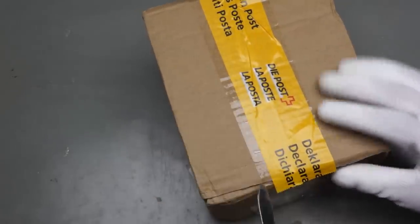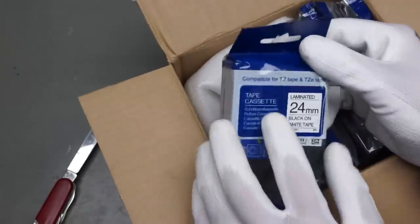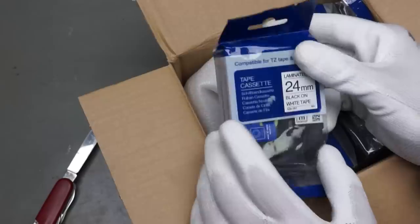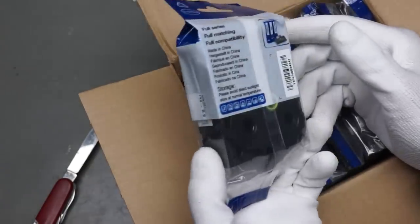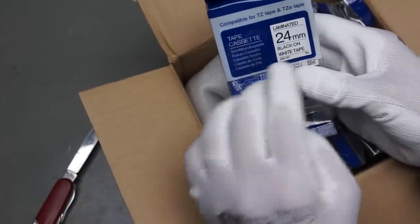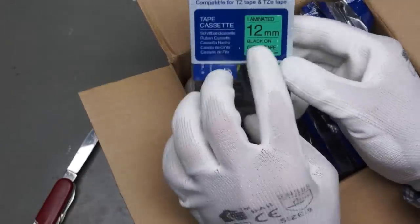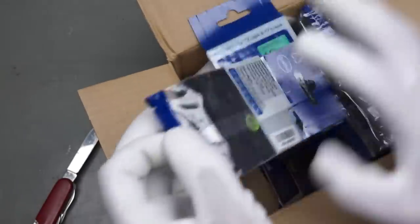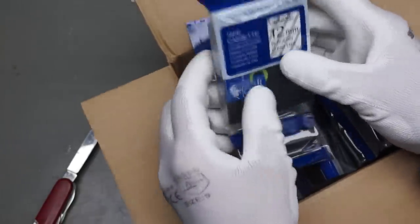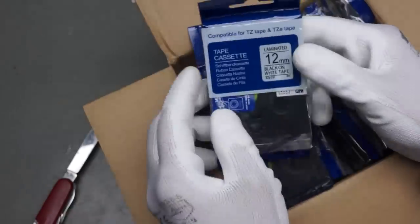This one is a big one. And it was opened by our customs, but so far they had no problem with it. These are fake brother tapes for my printer. These are 24 millimeters. I like these if I want to print large letters and so on. And here I have smaller ones. This is a green tape and this is a clear tape. And I think I have also some black and white, which is the normal thing I do.